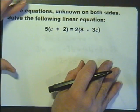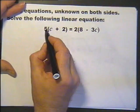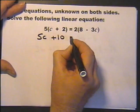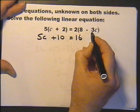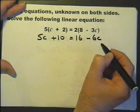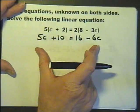See brackets, get rid of them. Always a good idea. 5 times d, 5 times 2, 2 times 8, 2 times minus 3 is minus 6, so 2 times minus 3d is minus 6d.